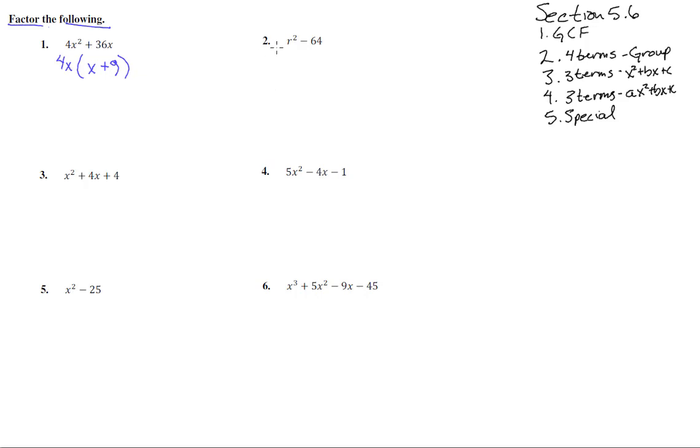Number two—this one has no greatest common factor and two terms, so it's a special case. It's a difference—notice that's a subtraction, that's important—difference of two perfect squares. r times r gives us r², and 8 times 8 gives us 64. The plus on one side and the negative on the other ensure that when they multiply back together, those middle terms will vanish. There we have the factoring of the difference of squares.